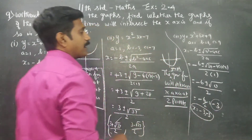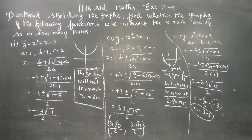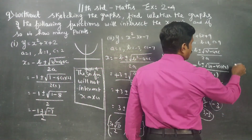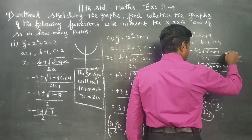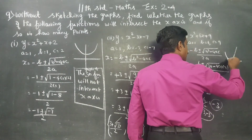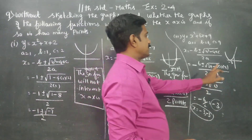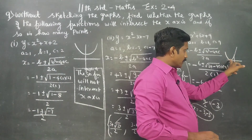So x equals minus 6 by 2, which is minus 3. The discriminant is zero, so both roots are equal to minus 3. This is a double root. The quadratic equation gives x equals minus 3 and x equals minus 3. The parabola just touches the x-axis at x equals minus 3.